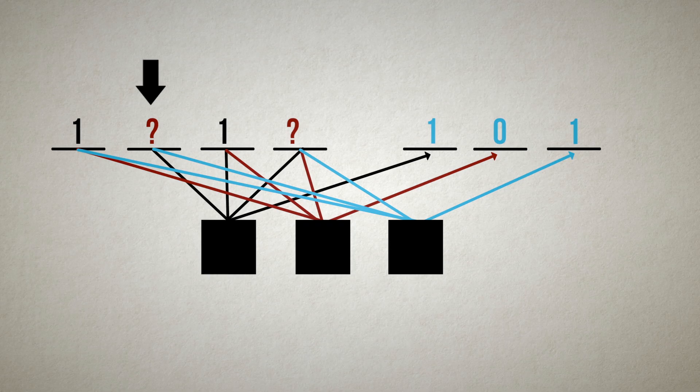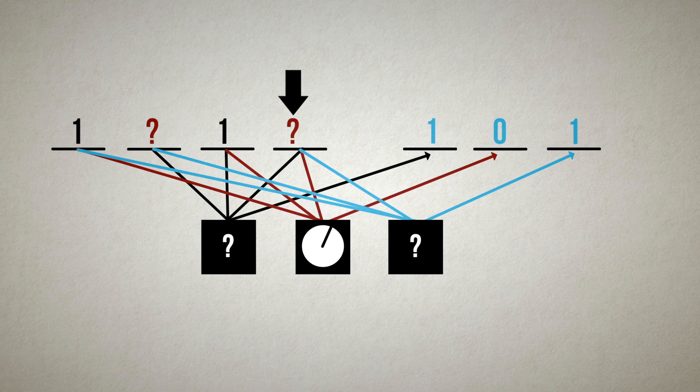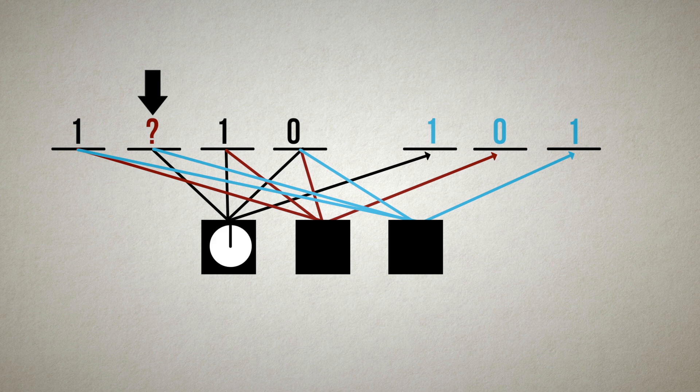In this case, we can't recover the first erasure right away since both black and blue sets contain two erasures. However, the second erasure can be recovered first because the red set has one erasure. And this provides the information we need to recover the first bit.